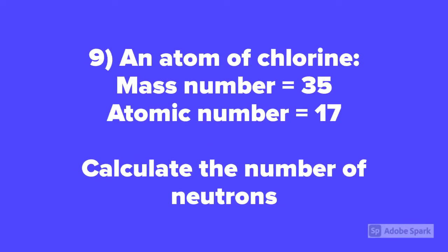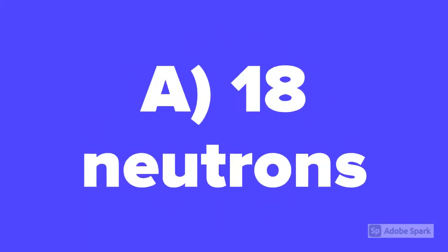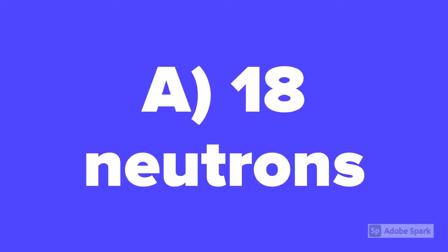Question number 9. An atom of chlorine has the mass number 35 and atomic number 17. Calculate the number of neutrons in this atom of chlorine. The answer is 35 minus 17, which is 18 neutrons.